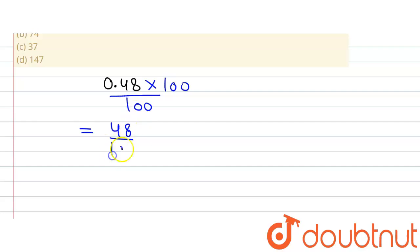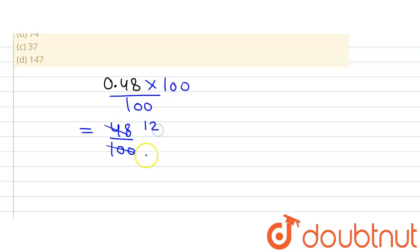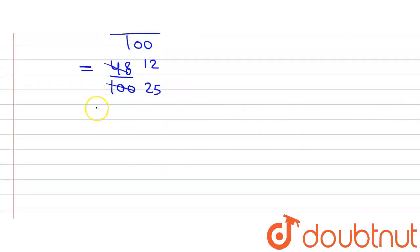Now we divide further to write it in simplest form. 48/100 is divisible by 4, giving us 12 in the numerator and 25 in the denominator. So in simplest form we have 12/25.